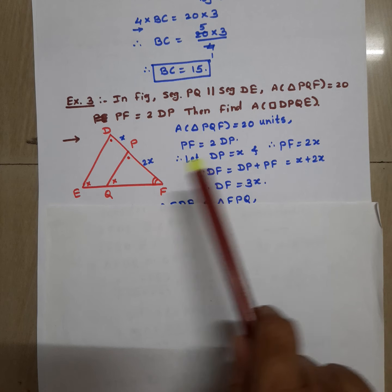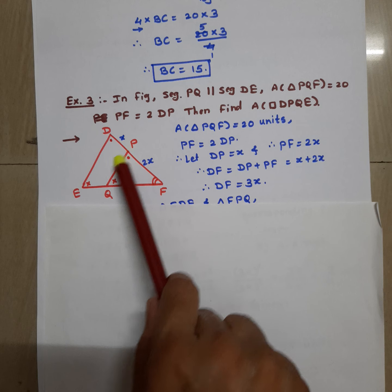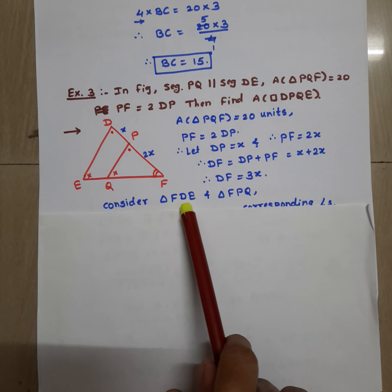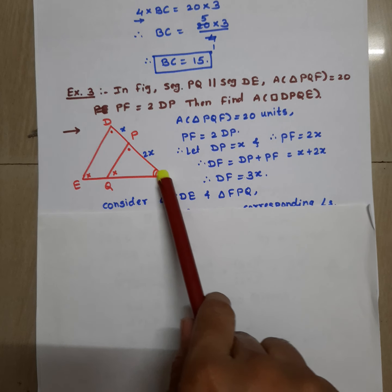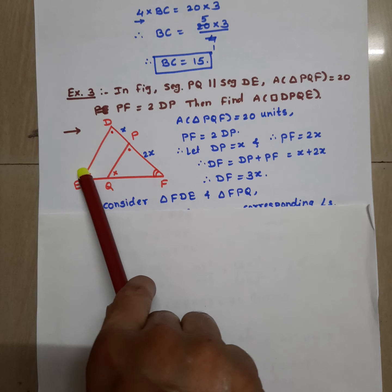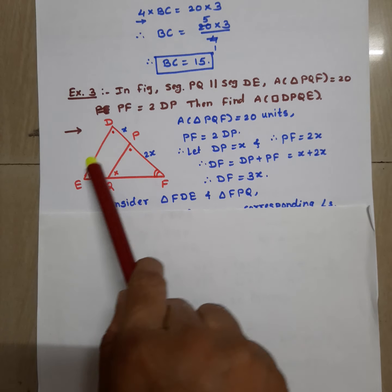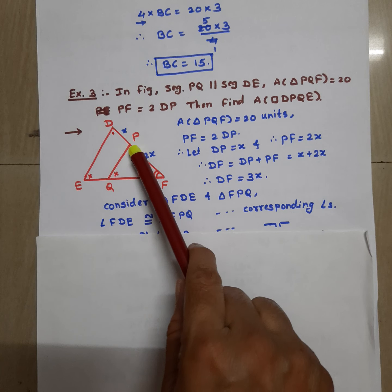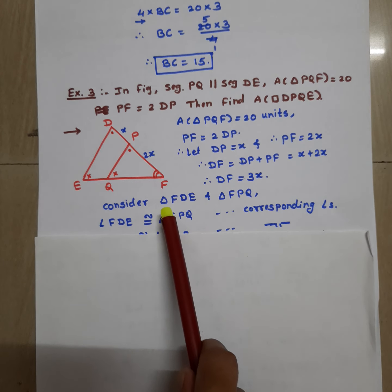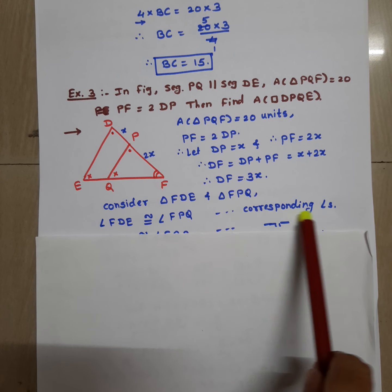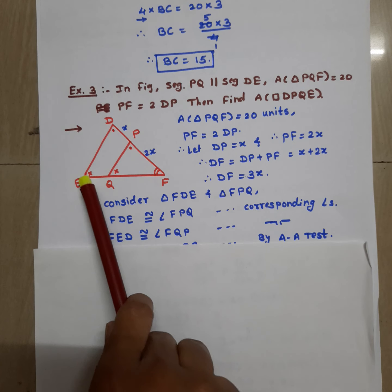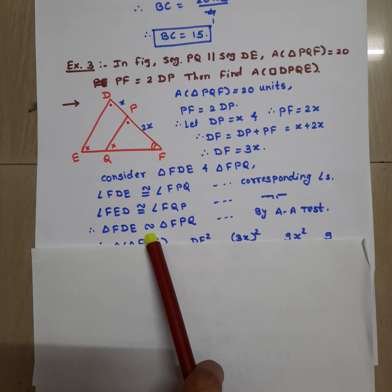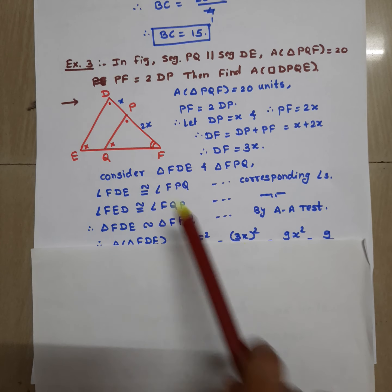Consider the two triangles in the figure: triangle FDE (the bigger triangle) and triangle FPQ (the smaller triangle). Since PQ is parallel to DE, the corresponding angles are congruent. Angle FDE is congruent to angle FPQ, and angle FED is congruent to angle FQP — both pairs are corresponding angles. Therefore triangle FDE is similar to triangle FPQ by the AA test.